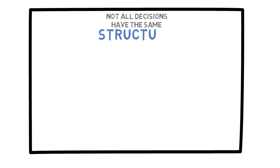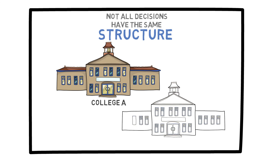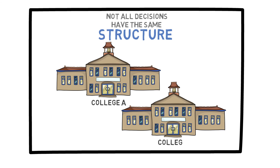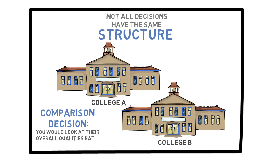It is important to know that not all decisions have the same structure. Some are structured like our insurance example, while others are different. For example, say you get accepted into two colleges, A and B, and you are trying to decide which to attend. This is what I would call a comparison decision. Each one has its own set of advantages and disadvantages, and you must decide between the two. Here you might not look at the individual probabilities, but rather the overall qualities of each choice by comparing them. In the next videos, we will discuss in-depth methods of approaching different kinds of decisions we may face in life.